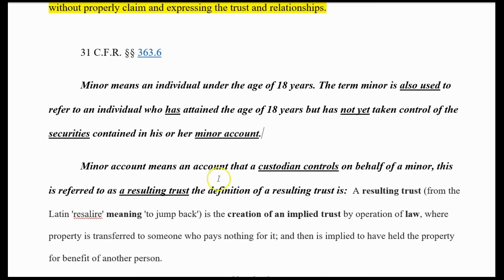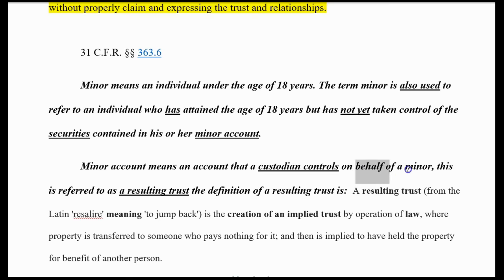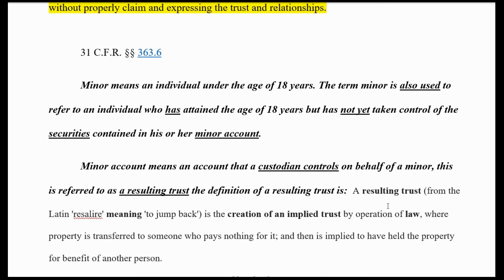A minor account means an account that a custodian controls on behalf of a minor — that's a trustee. Anytime you give control over to somebody on behalf of another, that's a trust relationship. As a minor, you're giving control over to somebody — this is referred to as a resulting trust. A resulting trust, from the Latin meaning 'to jump back,' is the creation of an implied trust by operation of law. In other words, just how you're acting implies the trust. People think it has to be a big official thing — it doesn't.